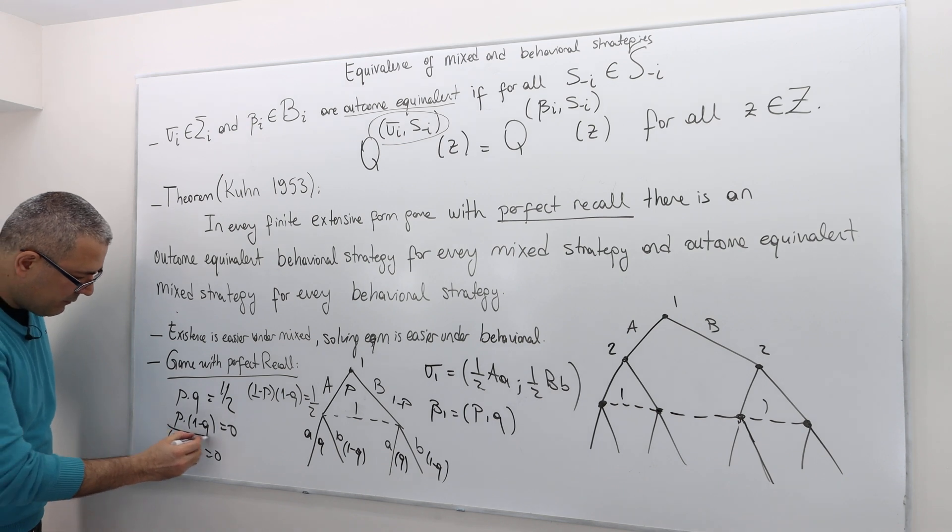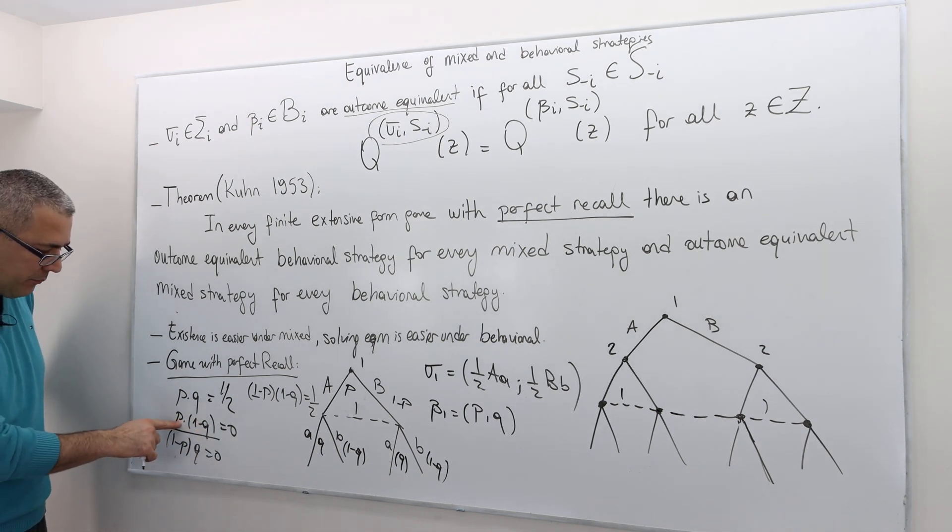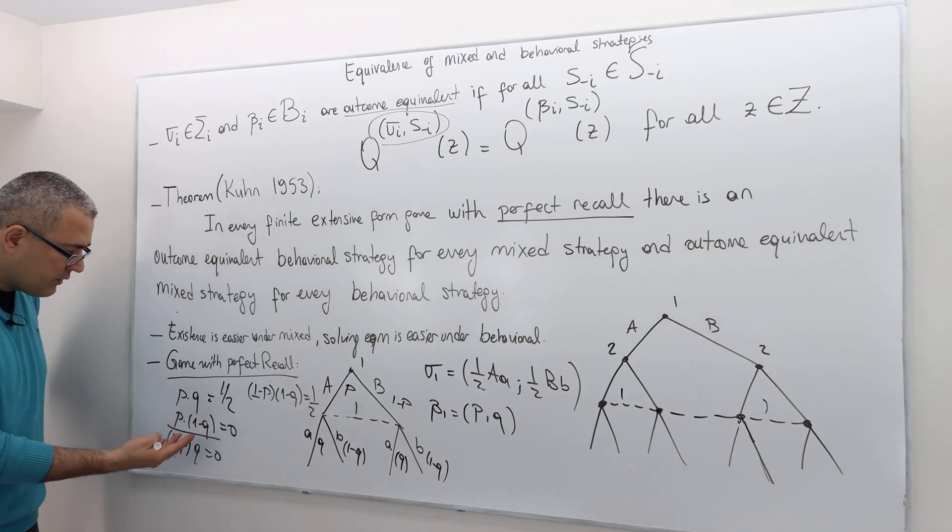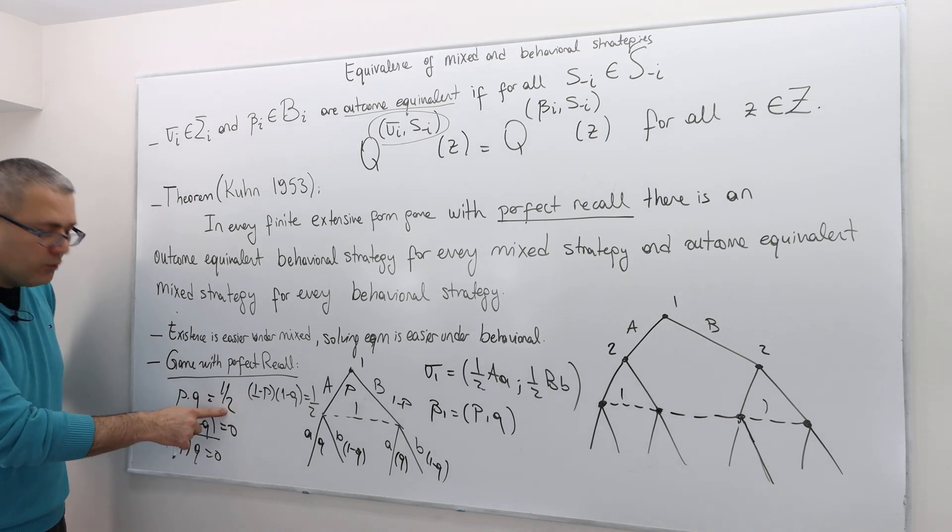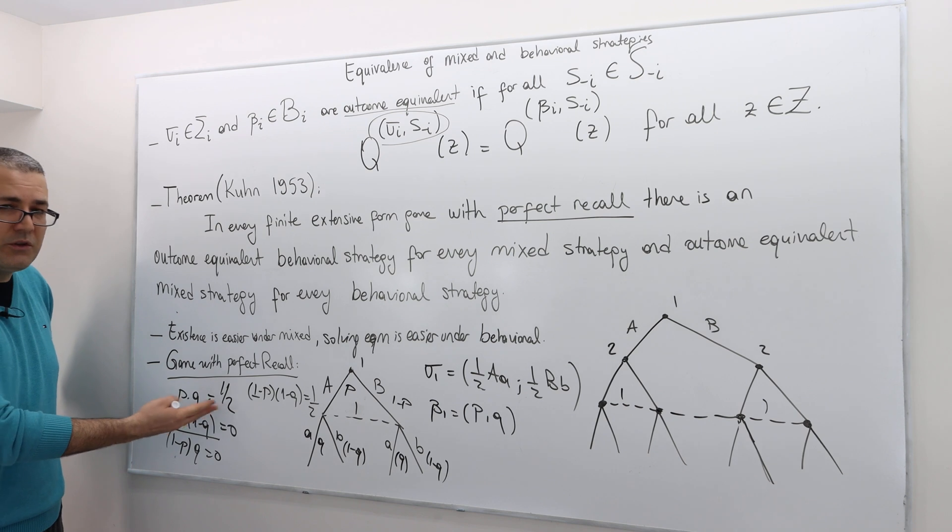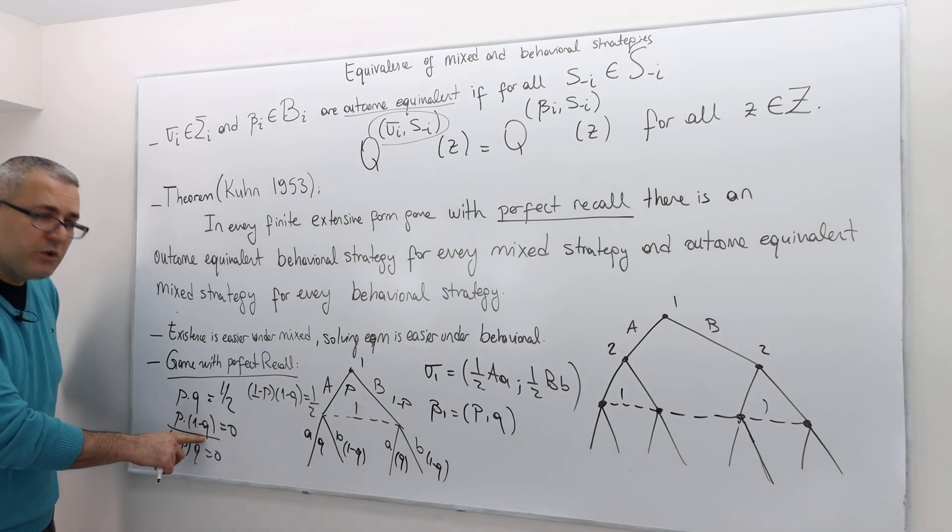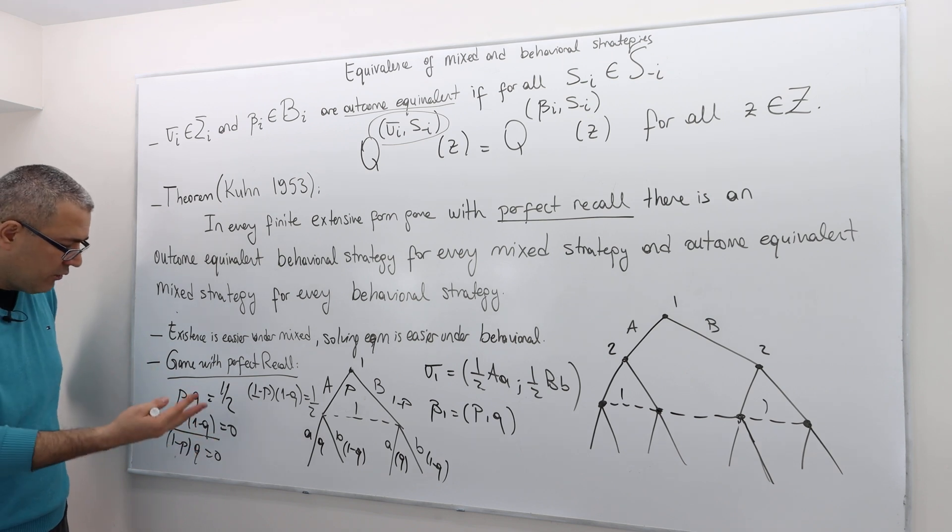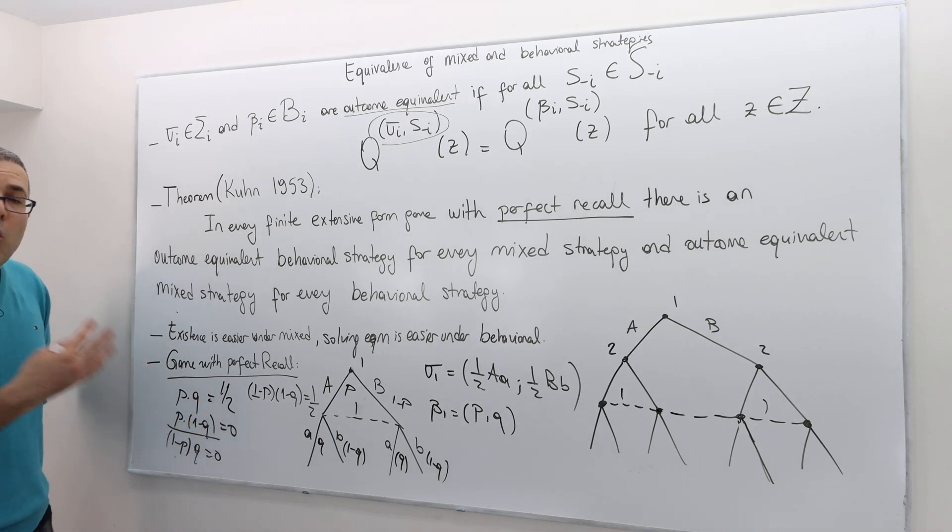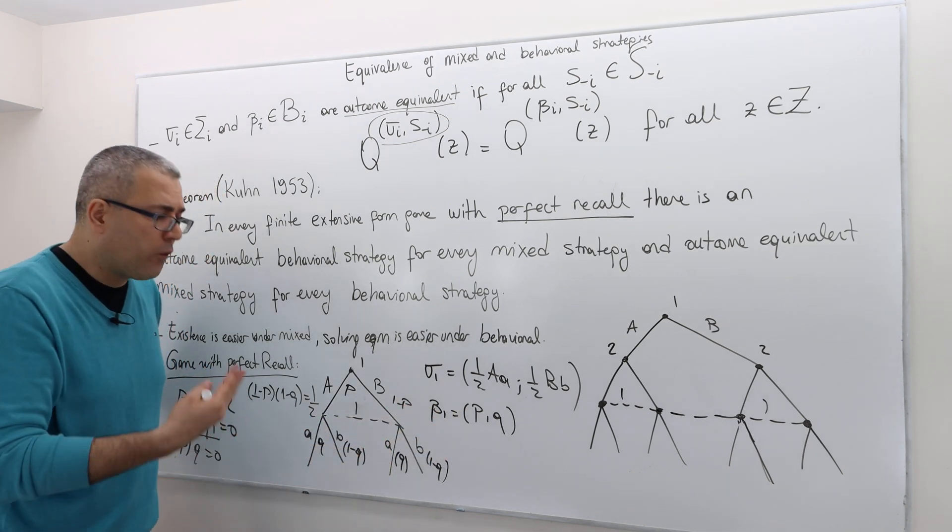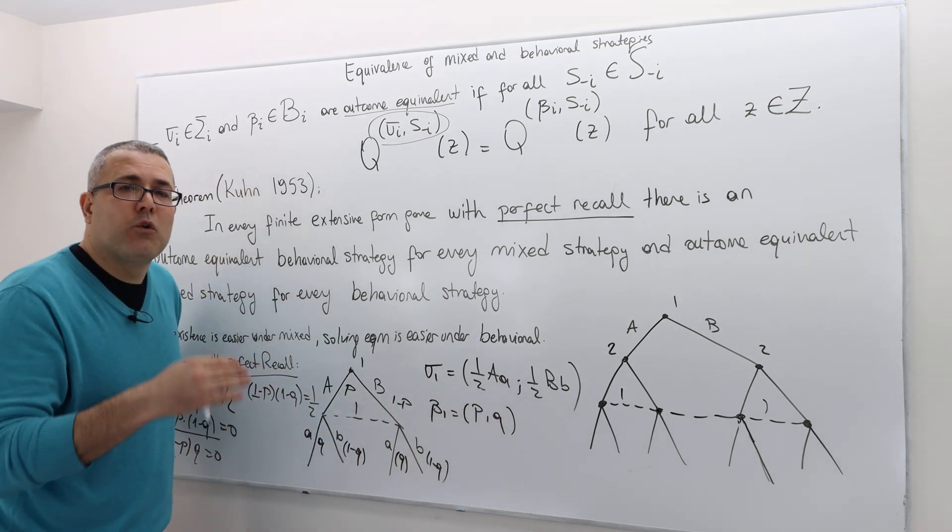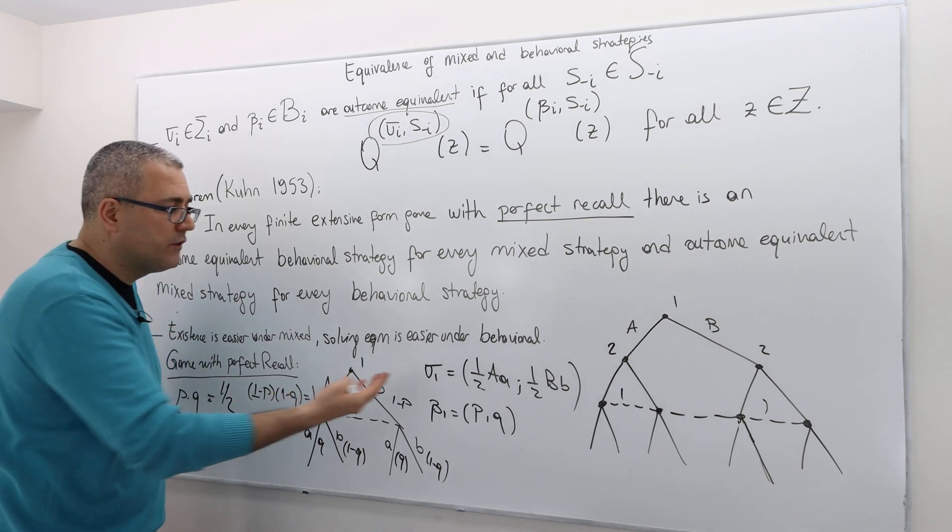If this multiplication is zero, one of those guys, either P or 1 minus Q, must be zero. If they both positive, remember, multiplication of two positive numbers can never be zero. And they cannot be less than zero or more than one. So therefore, one of them is zero. But if P is zero, then P times Q must be zero. Contradiction. I told you it has to be one half. But if 1 minus Q is zero, which means Q is one. But in this case, 1 minus Q is zero. So this multiplication must be zero. Another contradiction. So you know what? There's no P and Q values. Or there is no mixed strategy for player 1 that is going to be outcome equivalent to this pure strategy.